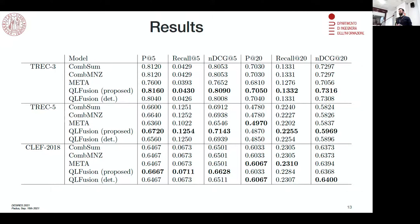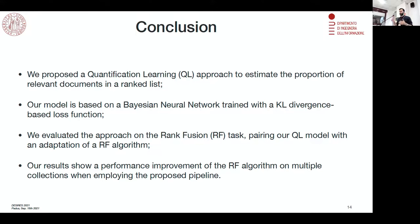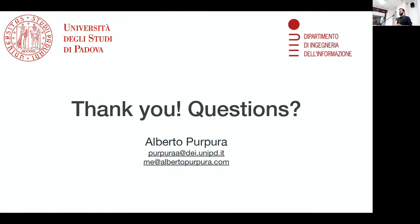If you haven't heard of Bayesian neural models before, I strongly recommend you have a look at them. In general, we proposed this quantification learning approach to estimate the proportion of relevant to not-relevant documents in a ranking list, using only the distribution of relevance scores as input, considering 10 to 20 documents at a time. We employed this in a rank fusion algorithm and achieved satisfying performance compared to other rank fusion approaches. Thank you for your attention — I'm happy to answer any questions.